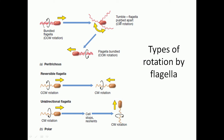For orientation, bacteria usually rely on tumbling movement to maintain balance in a particular liquid environment. For actual directed movement due to chemotaxis — due to the presence of food sources — they will migrate via bundling movement. That's it for peritrichous flagella.